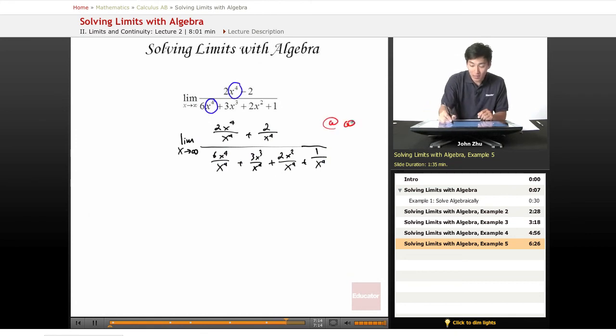So simplifying and looking at the behavior at infinity, we get that this reduces down to a 2, this is 0, this reduces down to a 6, this is 0, 0 as well, and the last term is 0.